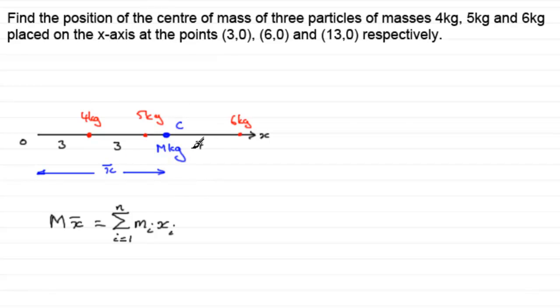So when we apply that to this problem here, if we say we're taking moments about O, what will we end up with? Well, we'll have the total mass is 4kg plus 5kg plus 6kg, a total of 15kg, so that's going to be 15 multiplied by x-bar, is equal to 4 times 3, plus, then we've got the 5kg times the distance to O, which is 6, 5 times 6, plus, and then we've got 6kg multiplied by the distance to O, which is going to be 13 units. So we've got 6 times 13.